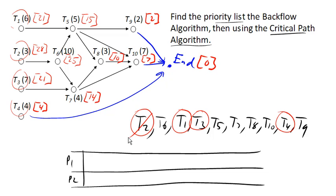And so we'll go ahead and assign task 2 and task 1. So task 2 gets assigned with a time of 3 and task 1 gets assigned with a time of 6.